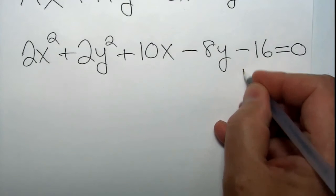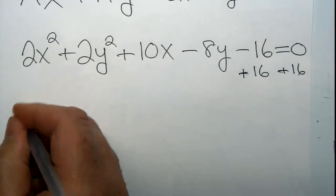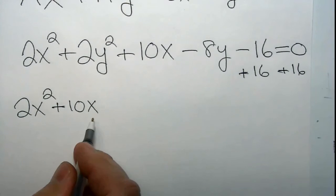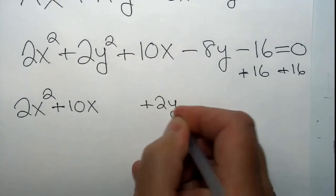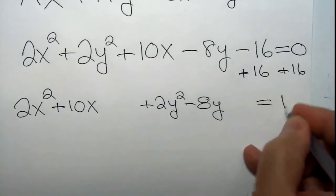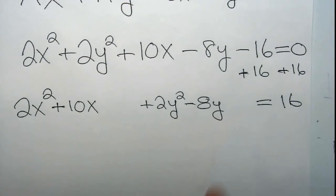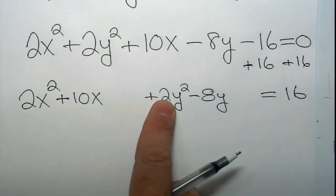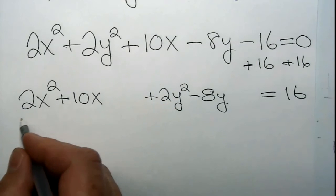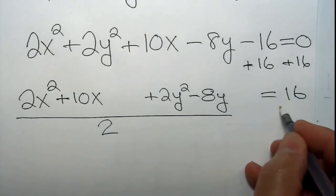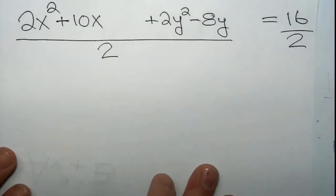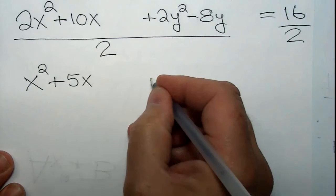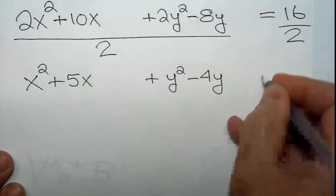Here's how you do it. First, move the constant to the other side by adding 16 to both sides. While doing that, group the x terms together — 2x squared plus 10x — and group the y terms together, leaving a little space so that we can complete the square. But don't jump the gun: we've got a coefficient of 2 on x squared and y squared, not 1. So divide both sides entirely by 2. Now we get x squared plus 5x, and y squared minus 4y, with 8 on the right.